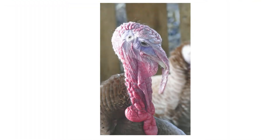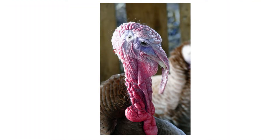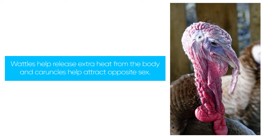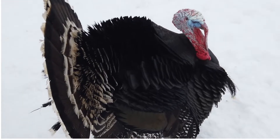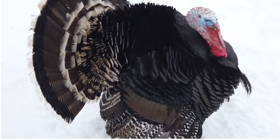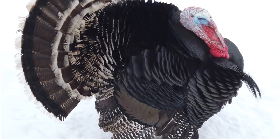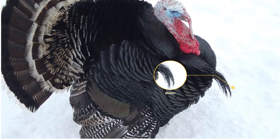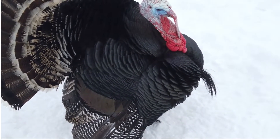However, in turkey you can see fleshy growths on the head and neck called caruncles. The purpose of wattles is to release excess heat from the body, and in turkey, caruncles help the male to attract female turkeys. Turkey also has a tuft of long fibers attached to the breast, which is called a beard, whereas chicken does not have this beard.